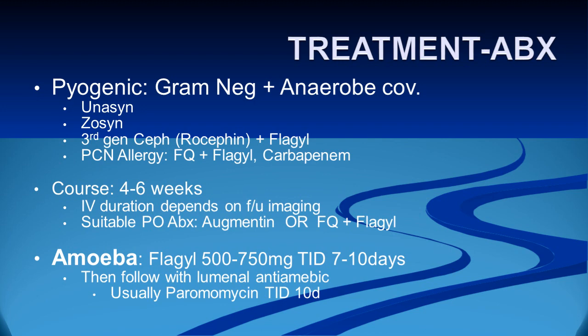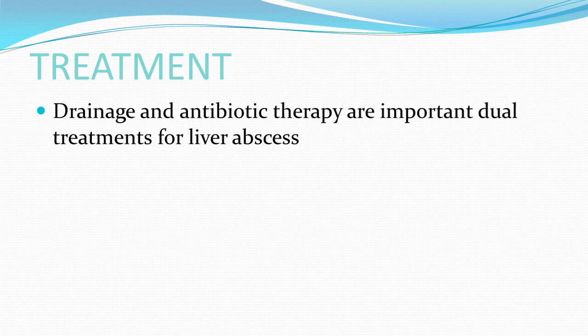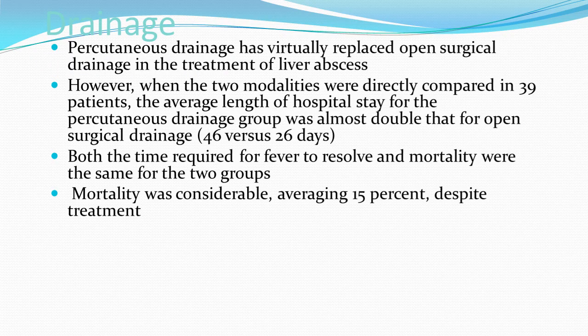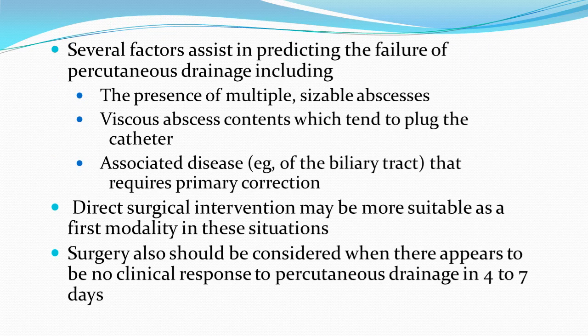Antibiotic therapy should be guided by culture and sensitivity, with a treatment course of four to six weeks. Drainage and antibiotic therapy are the dual treatment for liver abscess. Percutaneous drainage has replaced open surgical drainage as the primary approach. However, mortality is approximately 15% despite management. Factors predicting failure of percutaneous drainage include the presence of multiple sizeable abscesses, viscous abscess contents, and associated biliary tract disease.